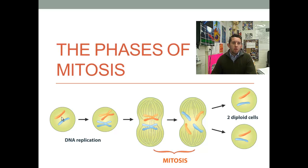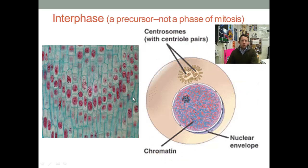So we go from these unduplicated chromosomes, we duplicate them into duplicated chromosomes, and we go through mitosis. We're eventually going to split these duplicated chromosomes into their respective sister chromatids, and we end up with two daughter cells that look just like the parent. So that's a little bit of an overview of mitosis.